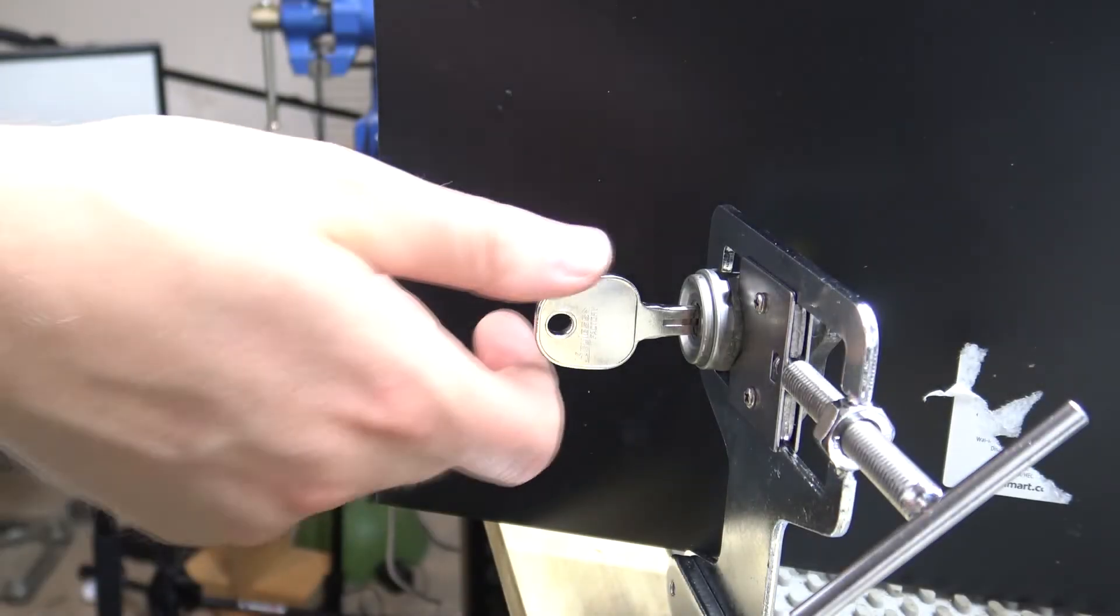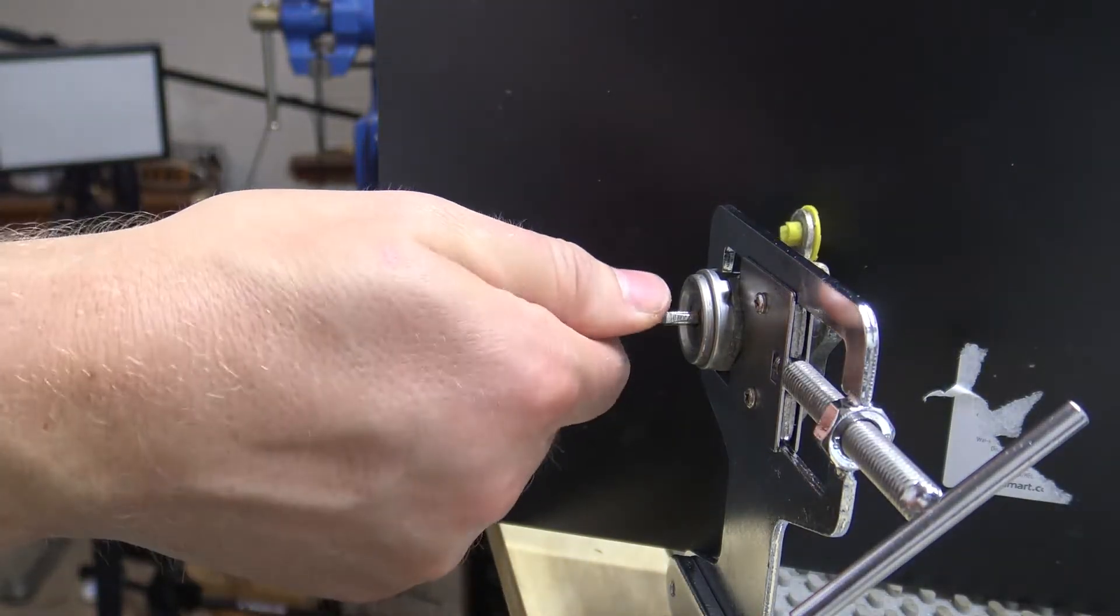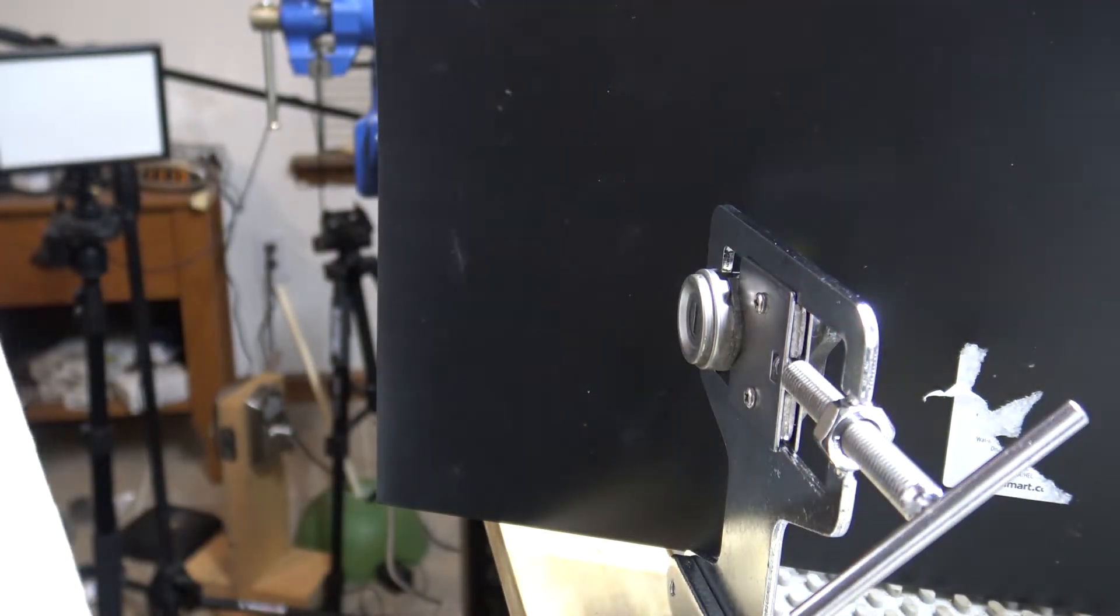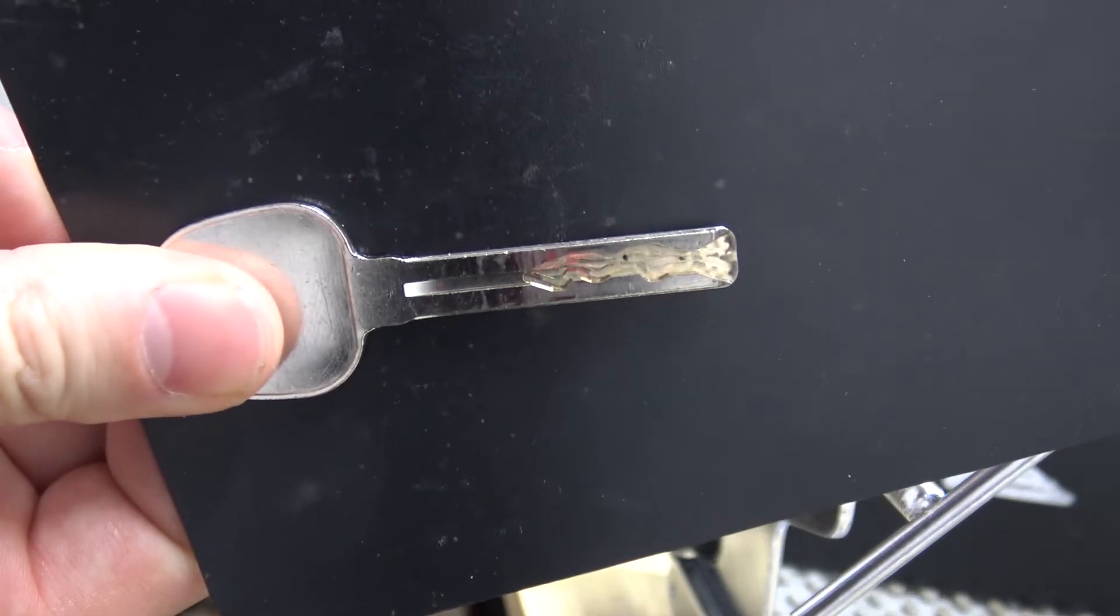Hey everybody, on this video we've got a 1997 Lexus ES300 door lock. It came from the junkyard like most of my practice locks here, and I've already made a key for it.